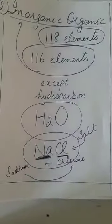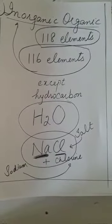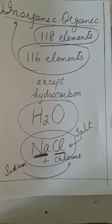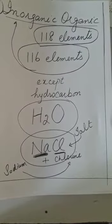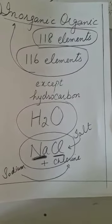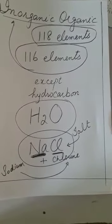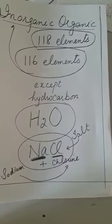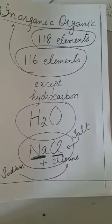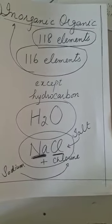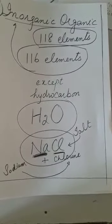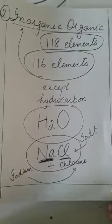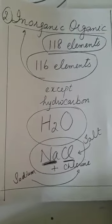The second branch of chemistry is inorganic chemistry. Inorganic chemistry is the chemistry which is related to all the elements and compounds except hydrocarbons. So the other elements, that is other than carbon, are studied in inorganic chemistry. In inorganic chemistry we study different elements and compounds which are other than hydrocarbons.